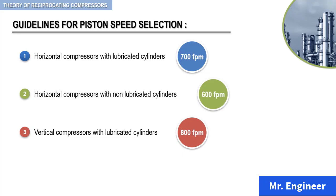And finally, for vertical compressors with non-lubricated cylinders, here again, a lower speed must be considered. 700 feet per minute is an acceptable guideline.